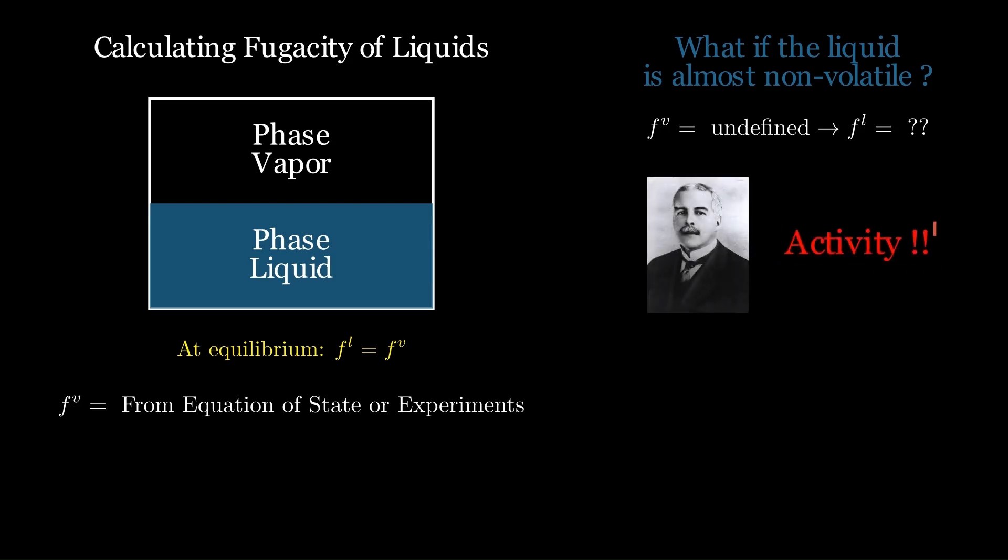This is where Lewis introduced activity. Instead of relying on a non-existent vapor, we switch to an activity-based framework. Remember, fugacity carries units of pressure, while activity has units of concentration. Different units, same goal, account for non-ideality.